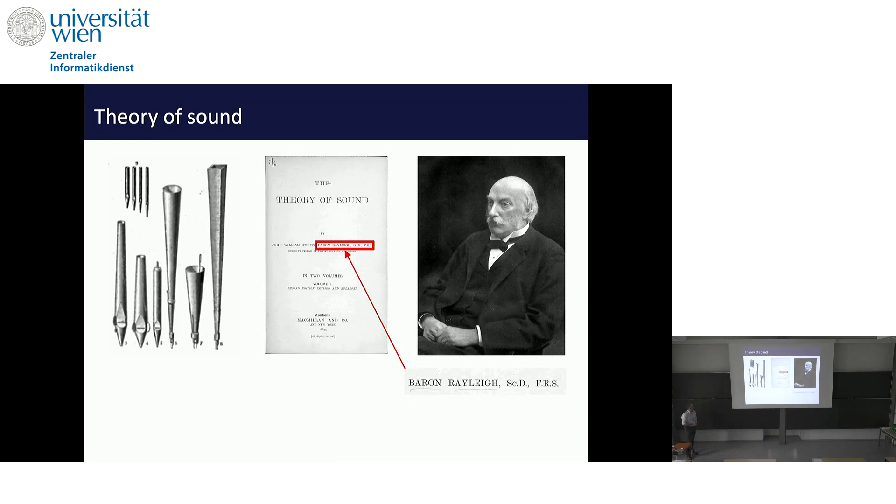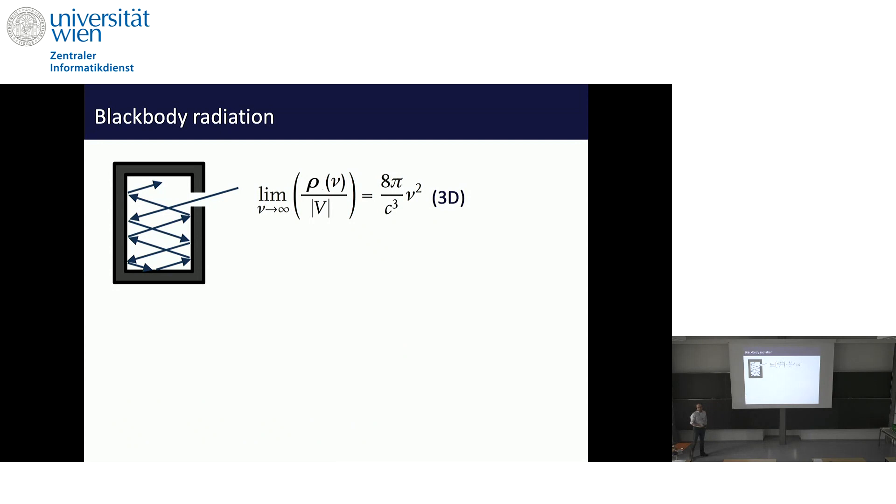Lord Rayleigh studied such phenomena of strings and organ pipes systematically. He particularly investigated how the number of overtones in organ pipes grows with frequency. He found that the number of overtones grows with the volume of an organ pipe, the volume of air, and with frequency cubed. Several years later, he realized that this analysis he developed for studying sound problems, he could actually also apply to heat radiation. This led him to the famous Rayleigh-Jeans law, one of the founding pillars of black body radiation.